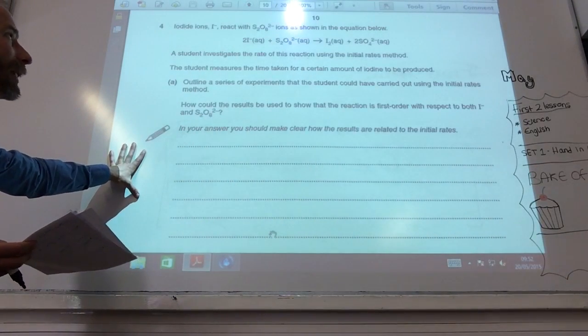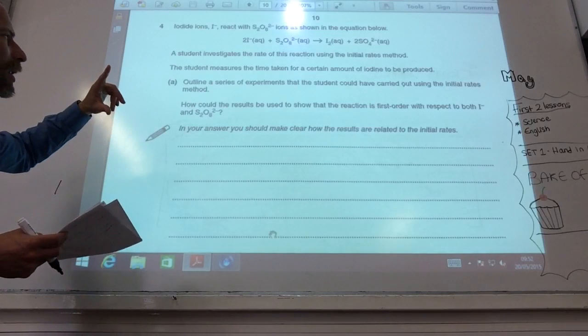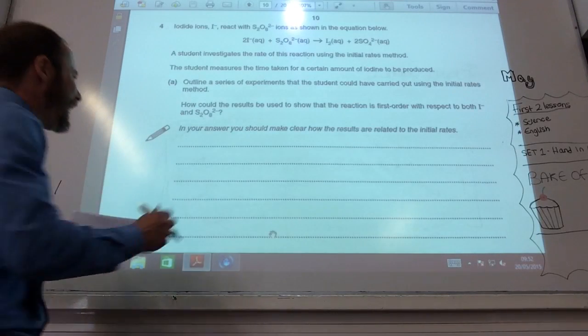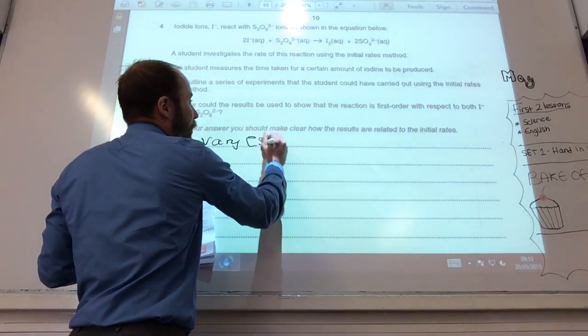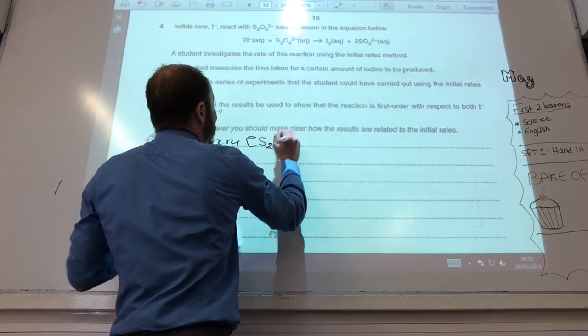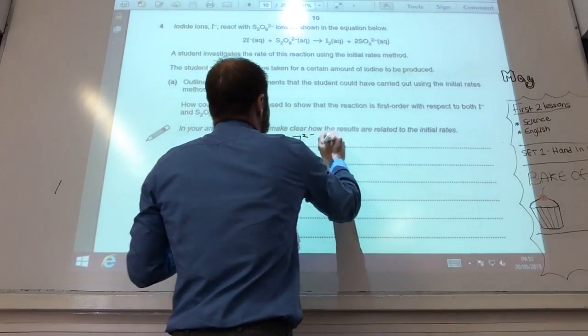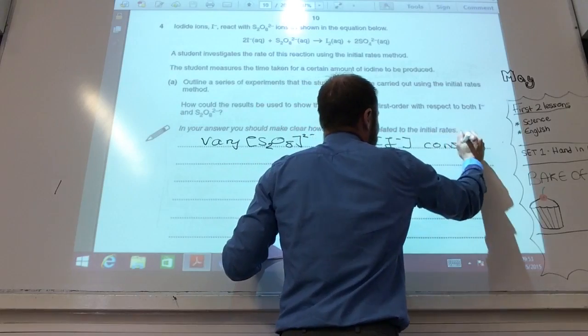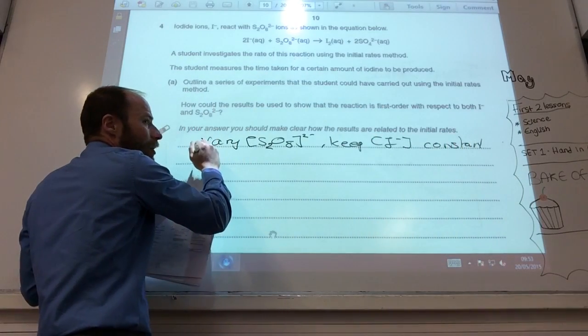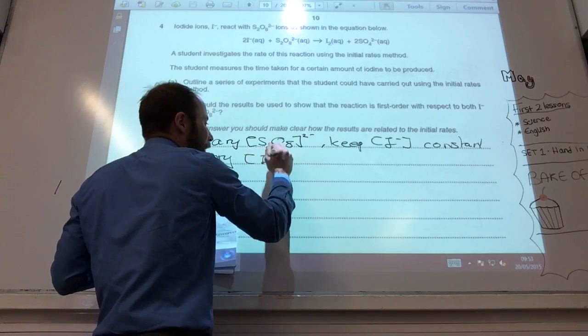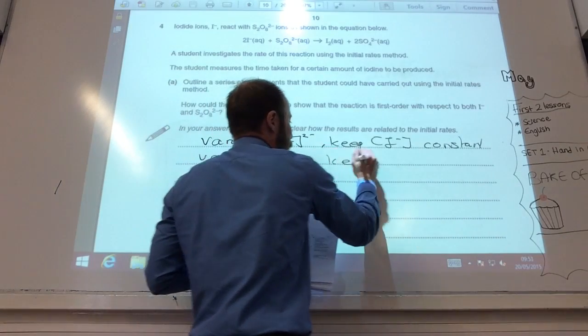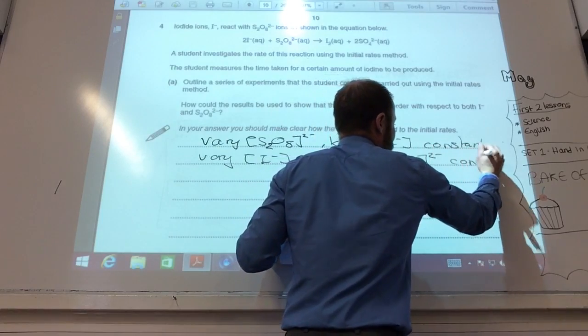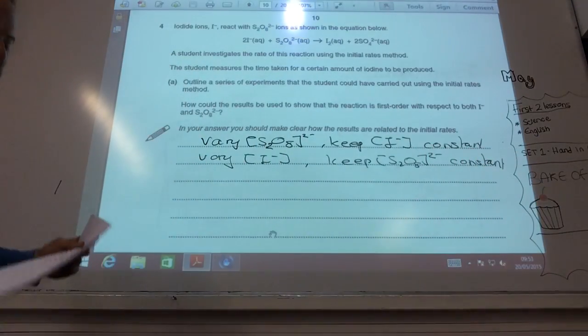How would you do that? Well, the key thing, if you think about those tables that they give you, you would, first of all, do an experiment where you vary the concentration of S2O8 2 minus, and keep the concentration of I minus constant. You would then do an experiment where you vary I minus, but keep that constant. Remember how those tables work, one stays the same, you vary the other one.